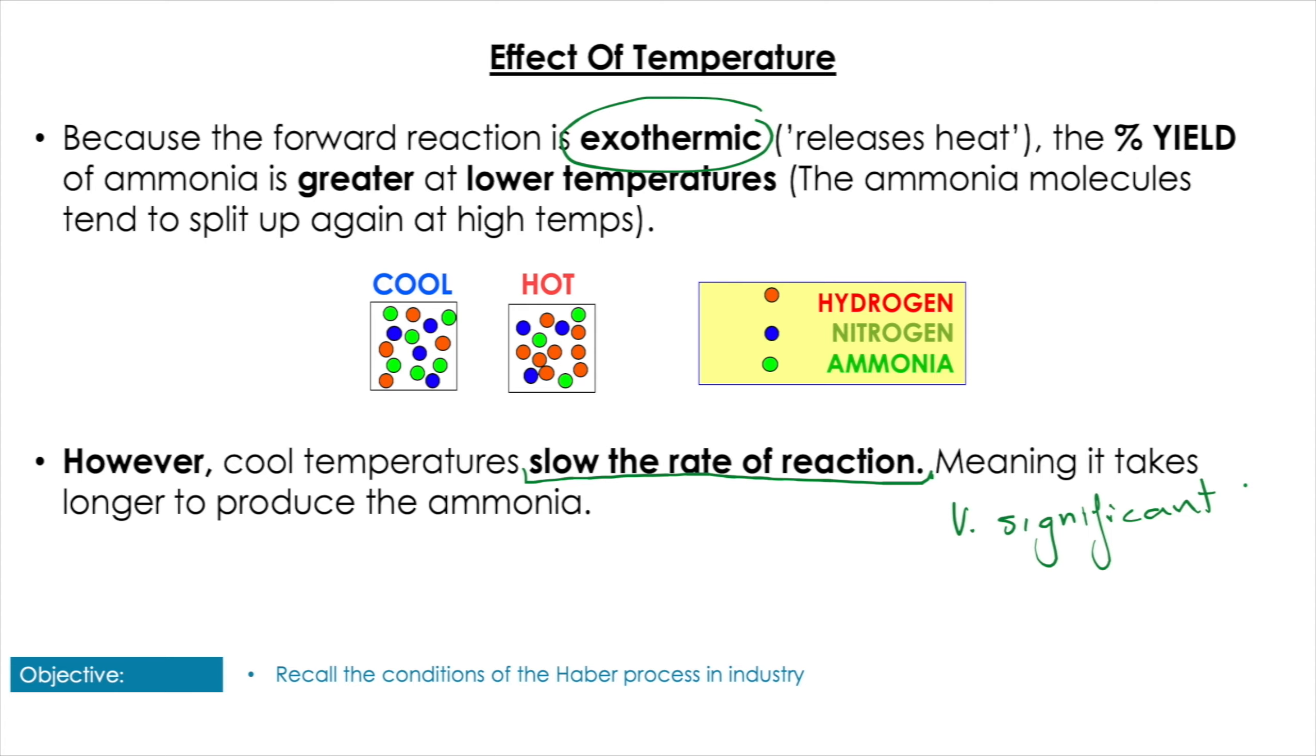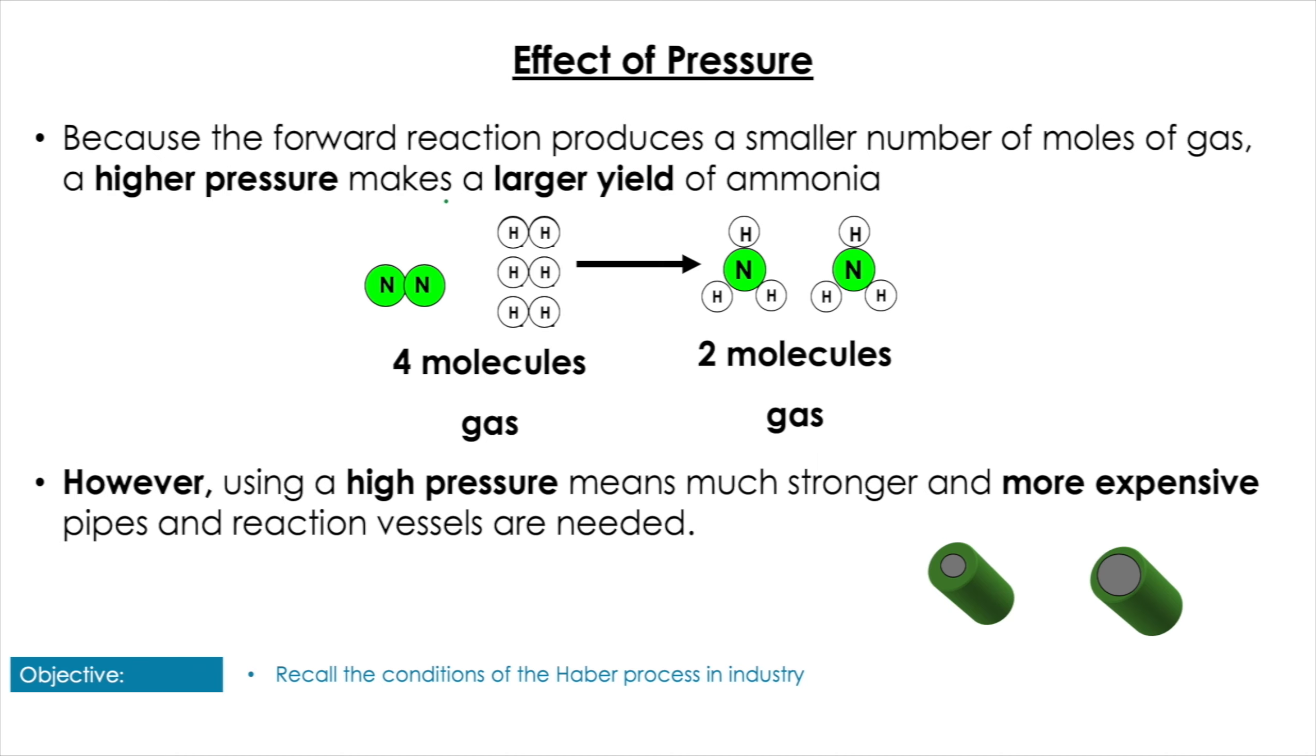And actually, because remember we want to produce this in an economic situation, we want to increase our output. So actually having a rate of reaction with less yield is more advantageous in industry.